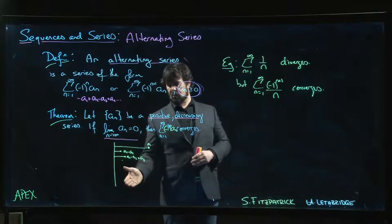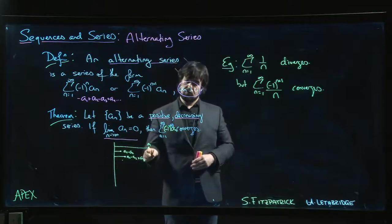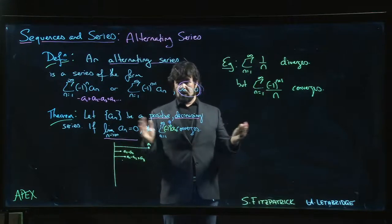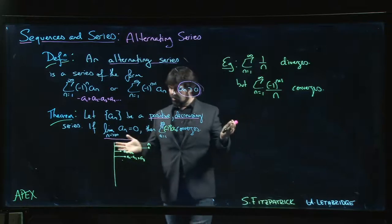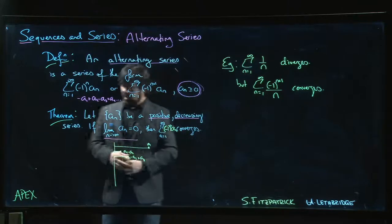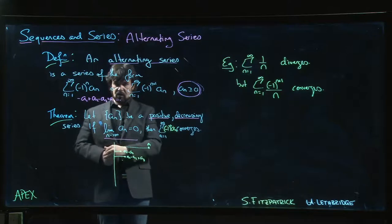If you look at the even terms, you have an increasing sequence that's bounded above, say by a_1. So you've got two bounded monotone sequences—you know that they have to converge. The main thing is showing that they converge to the same limit. Once you've established that, you get this theorem.